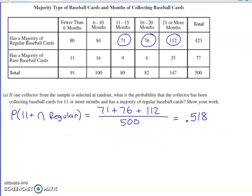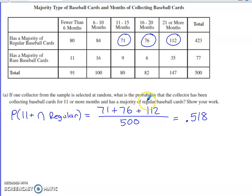In Part A, we're asked to do a probability calculation. One collector is going to be chosen from the sample at random. What's the probability that that collector has been collecting cards for 11 months or more and has the majority of regular cards in their collection? Show your work.